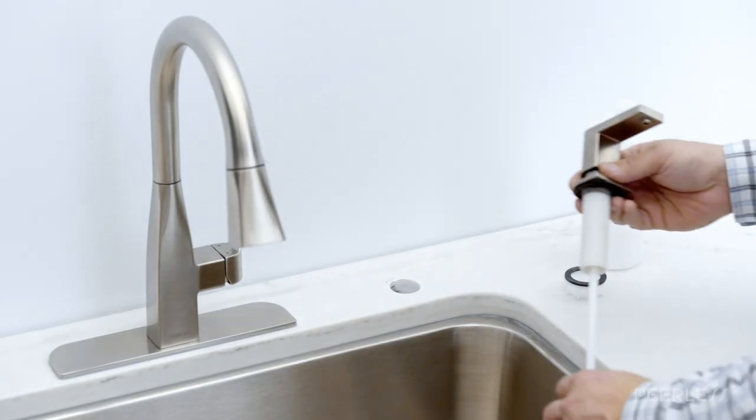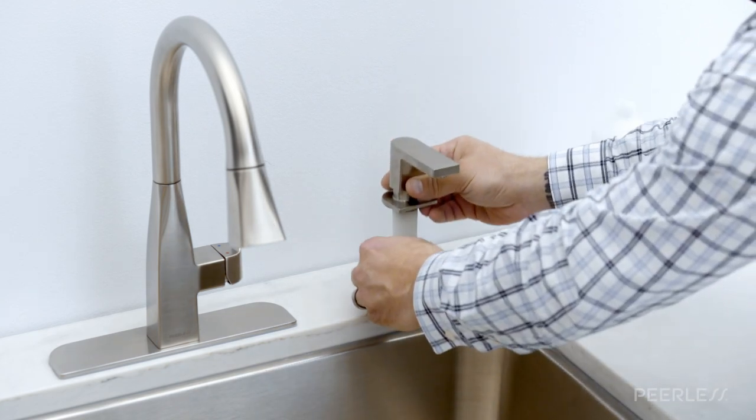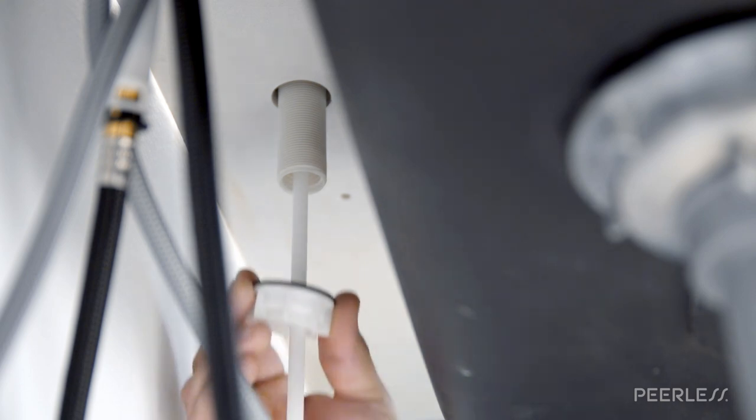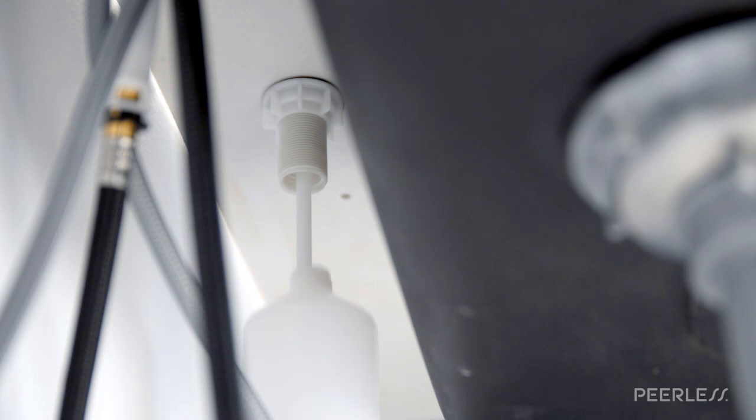If you wish to install the soap dispenser, sold separately, insert the body assembly and pump through the selected hole in the sink and secure with the nut. Then screw the bottle onto the body assembly shank.